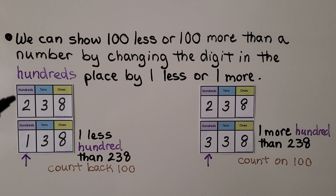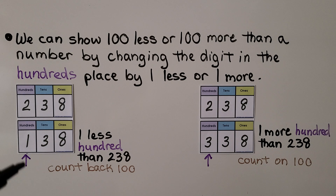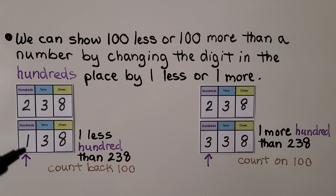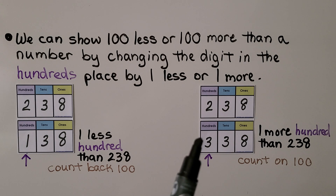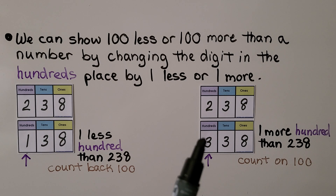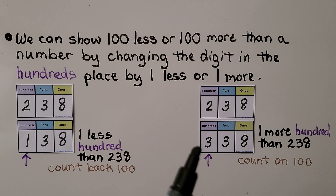We have 238. For 100 less, we would take away 1 of the hundreds. We count back 100, and 1 less than 2 is 1 — we have 138. For 100 more, we would add 1 to the hundreds place. Instead of 2, we now have 3. We have 338. We count on 100.